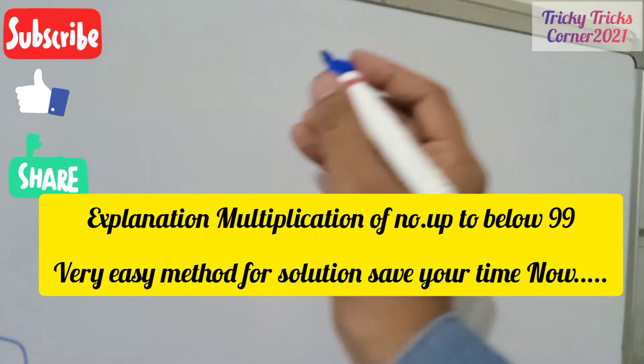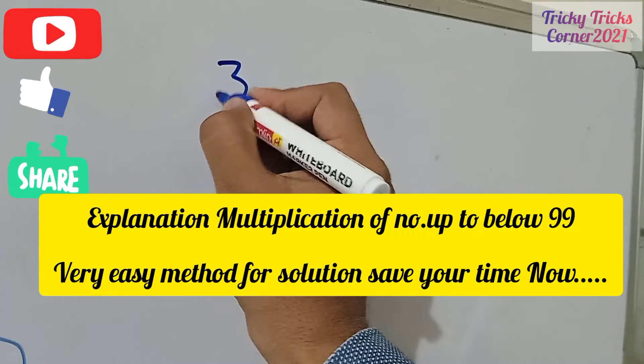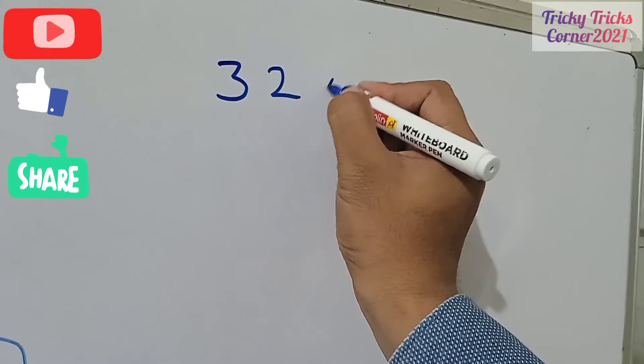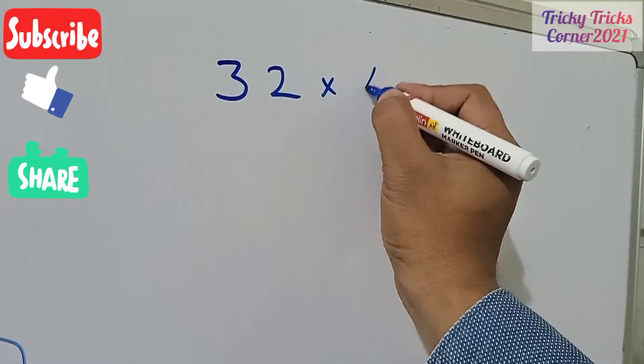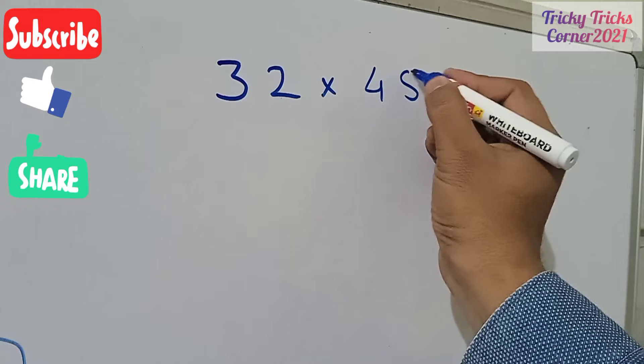First of all I am writing over here, this is 32 multiplied by 45.